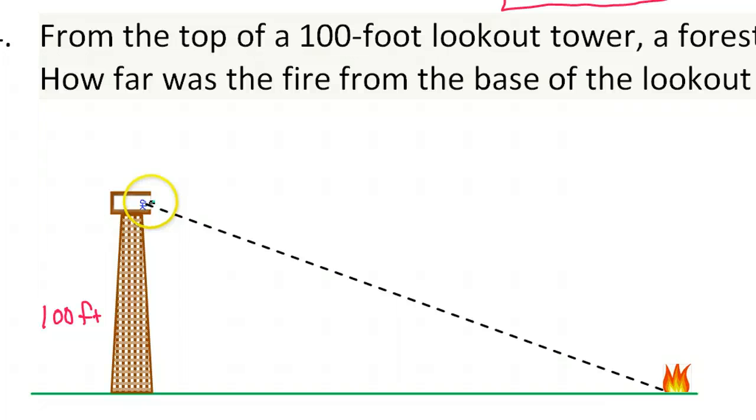25 degree angle of depression means if you're looking straight out, the 25 degrees would be right here. It's how many degrees down from the horizontal it is. Now this angle is the same as this angle right here, so let's go ahead and put it over there. From the perspective of the fire, you would call this an angle of elevation. But either way, this is the angle.